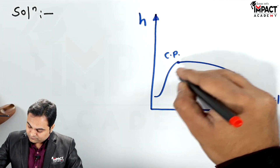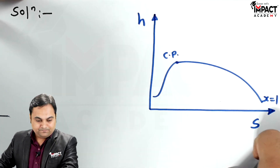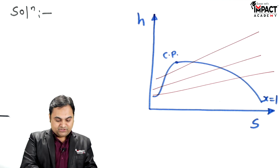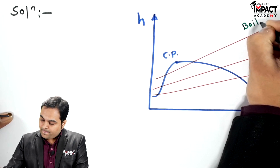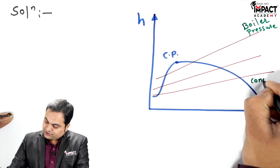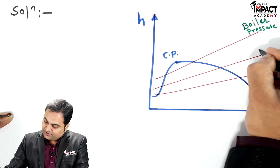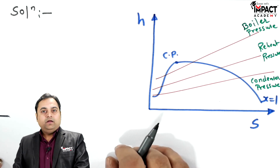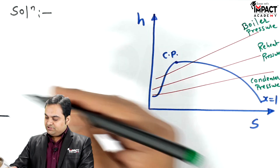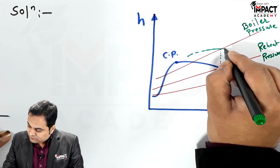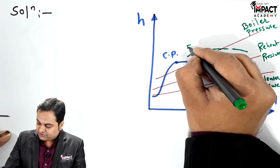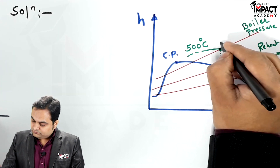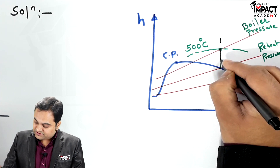Three pressure lines are drawn on the diagram — of diverging nature — corresponding to the three pressures in the problem. The highest pressure is the boiler pressure, the lowest is the condenser pressure, and the pressure in between is the reheat pressure. For point number one, the pressure value is unknown but the temperature is 500 degree Celsius. The temperature line of 500 degree Celsius intersects the boiler pressure line to give point one.